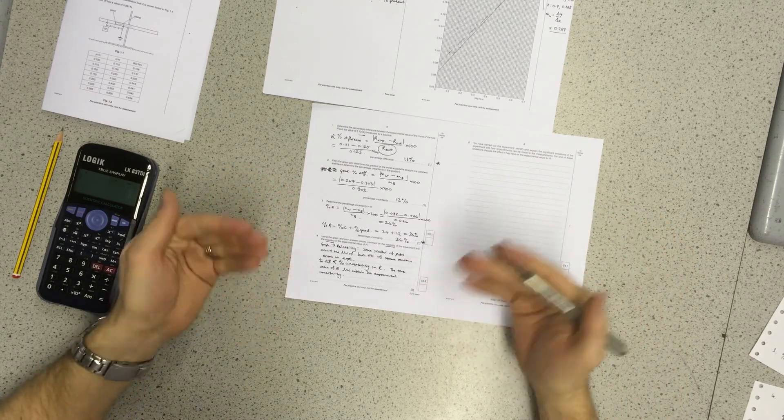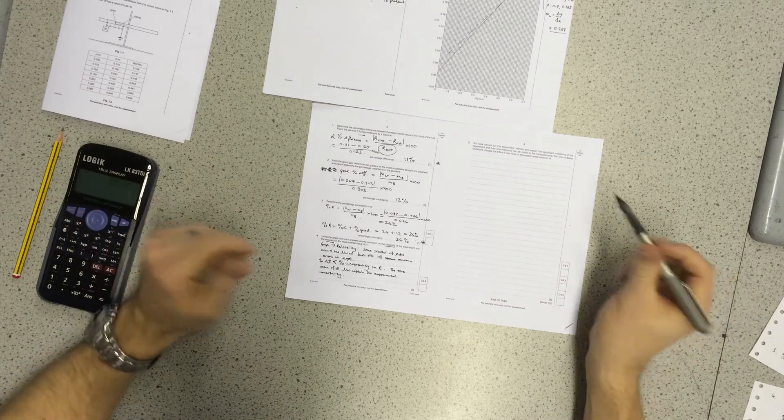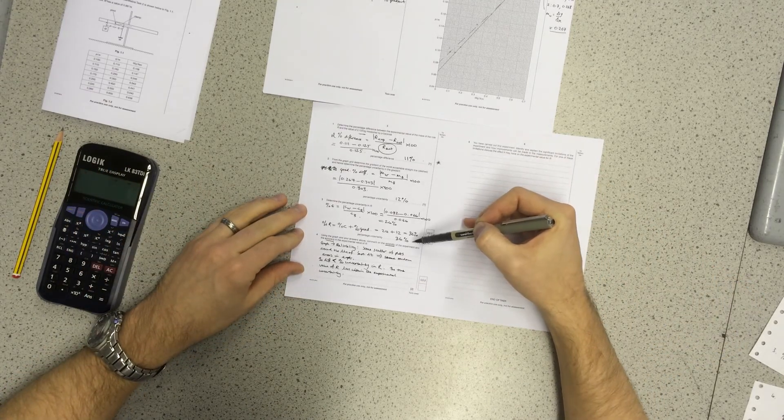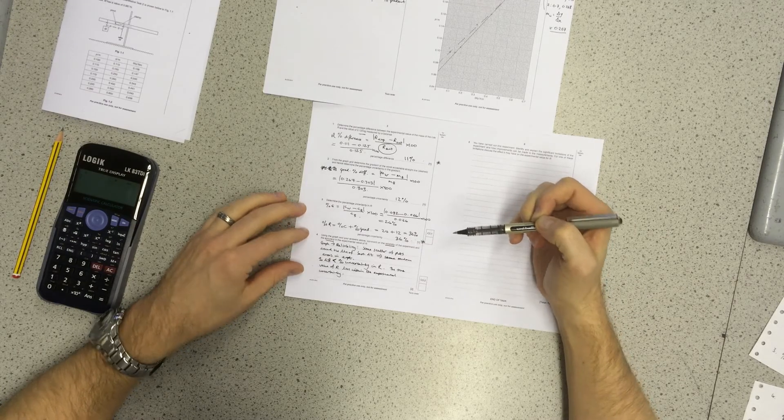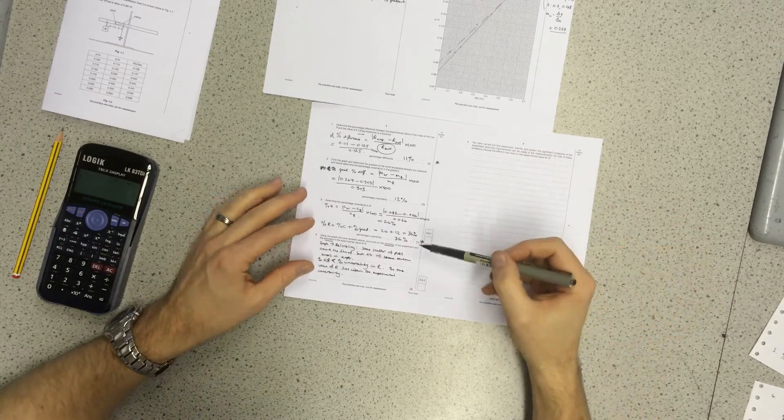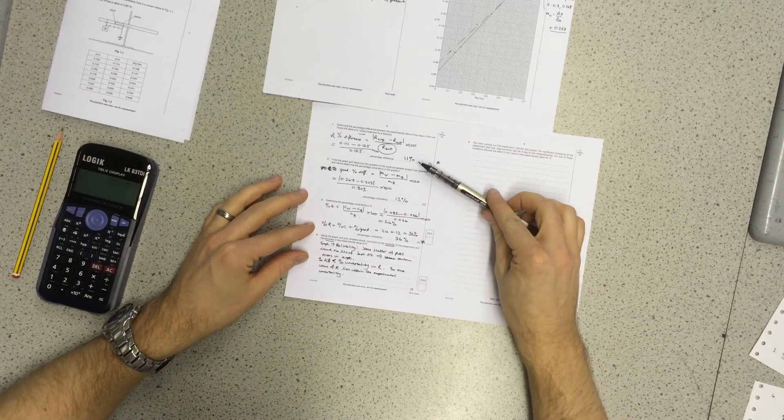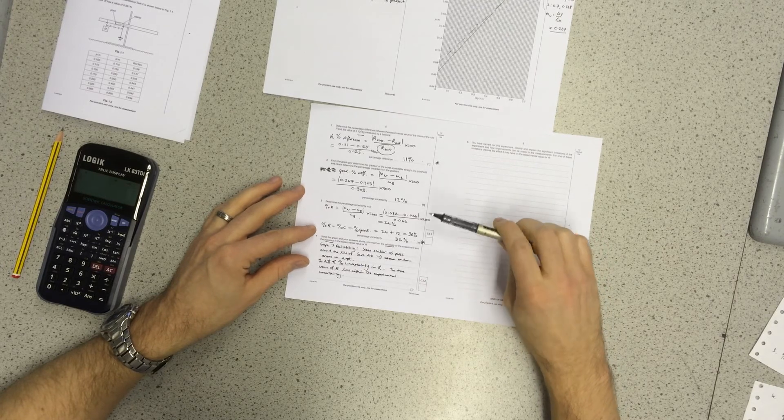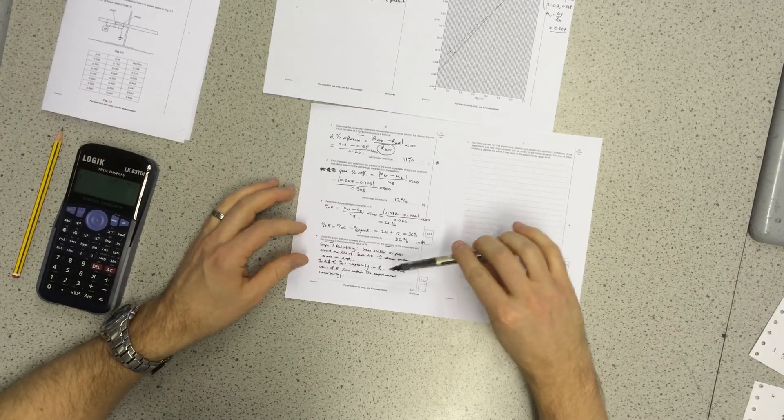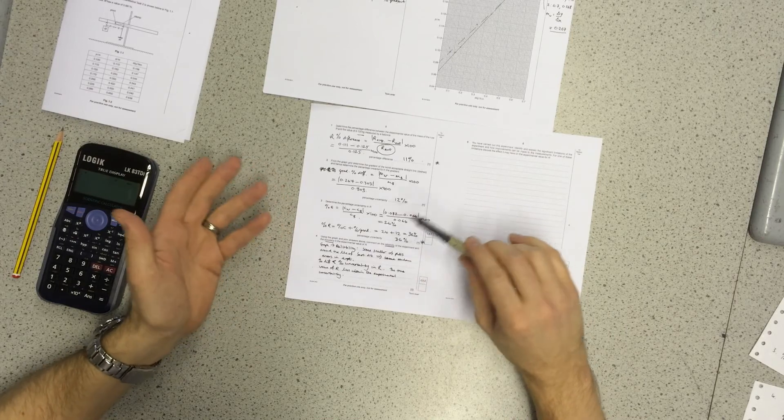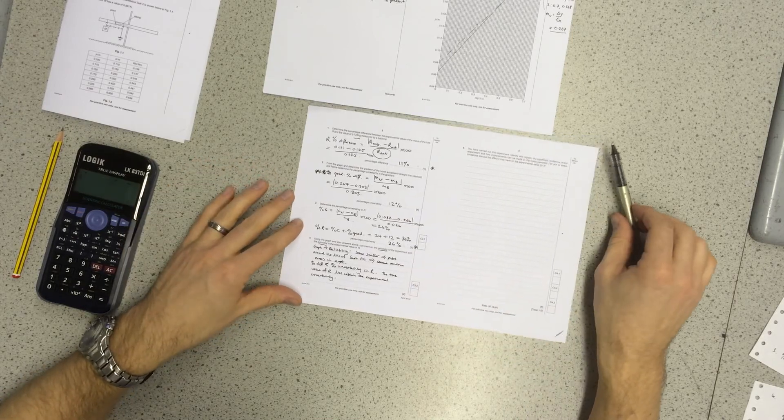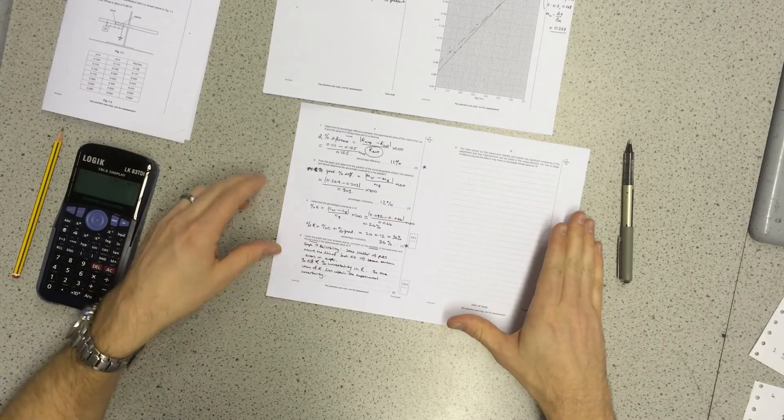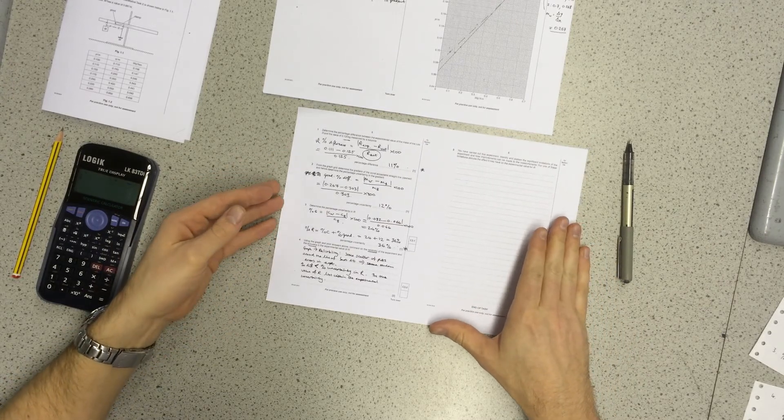Let's just suppose, as an alternative, that the percentage difference was larger than the percentage uncertainty in R. In that case, what we would say is that the percentage difference is larger than the percentage uncertainty. Therefore, the true value of R lies outside the experimental uncertainty. That would indicate the presence of a systematic error. That is questions one to four for this evaluative task.